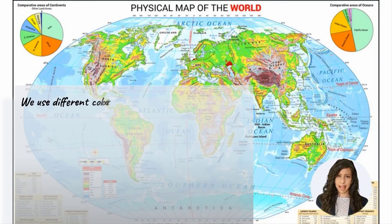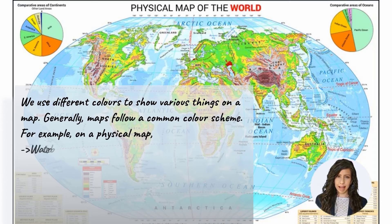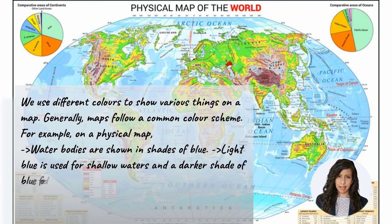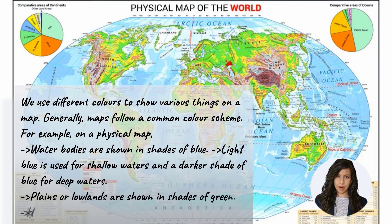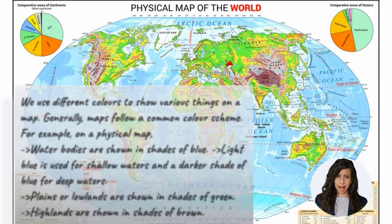Colors: Maps par alag-alag cheezon ko dikhane ke liye hum alag-alag rangon ka istemal karte hain. Aam taur par, maps ek common color scheme ka paalan karte hain. Udaharan ke liye, physical map par water bodies ko nilay rang mein dikhaya jata hai. Halke nilay rang ka upyog shallow waters ke liye kiya jata hai aur gehre pani ke liye gehre nilay rang ka upyog kiya jata hai. Plains ya lowlands ko haray rang mein dikhaya jata hai. Highlands ko brown color mein dikhaya jata hai.